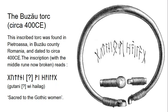Closer to the Ostrogothic period, we have the Buszaháza ring found in Pietroasa in Romania, dated to around 400 CE. The inscription reads 'gutanī ō wē hailag,' and has been interpreted to mean 'sacred to the Gothic women' — 'gutanī' meaning 'of the Goths,' 'wē' from a Proto-Germanic word for 'wife,' and 'hailag' meaning 'holy,' where we can see connections to Wulfilian Gothic.